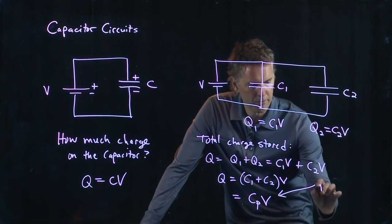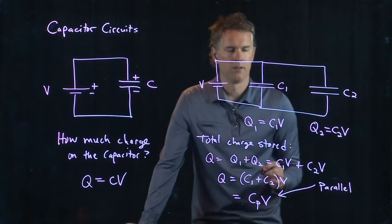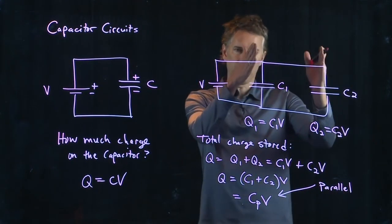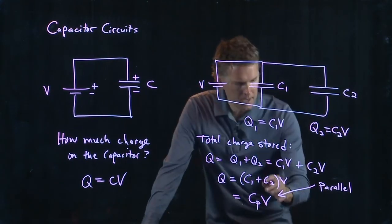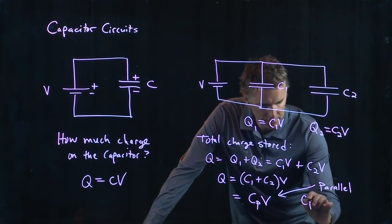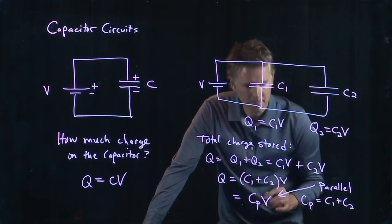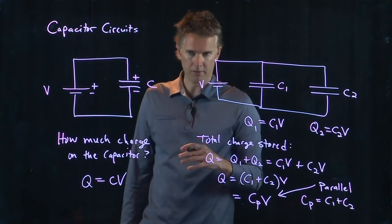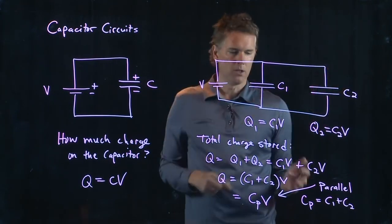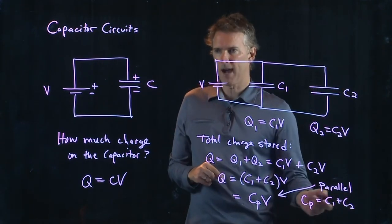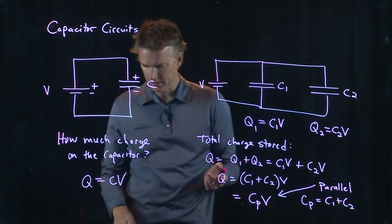And that thing we can call C sub P V. This refers to parallel. We've added these things in the parallel configuration, and yet somehow their capacitance has added up, which is very different than resistors. When you add capacitors in parallel, you simply add their capacitances to calculate the equivalent capacitance of that circuit.